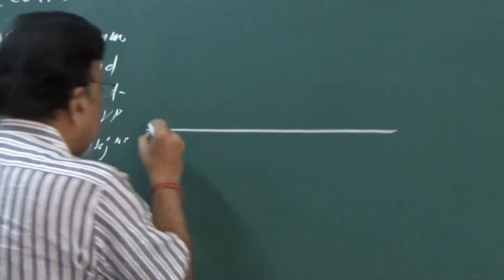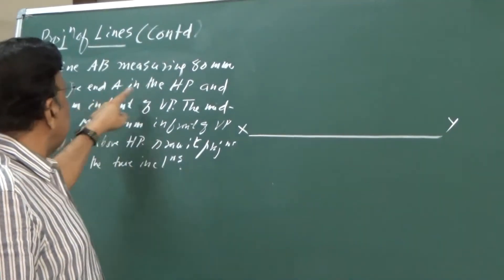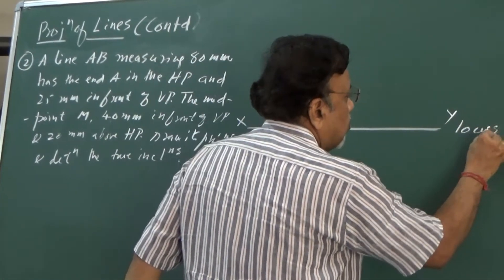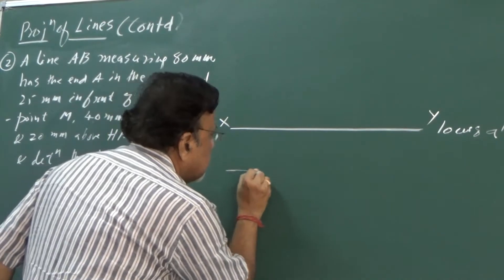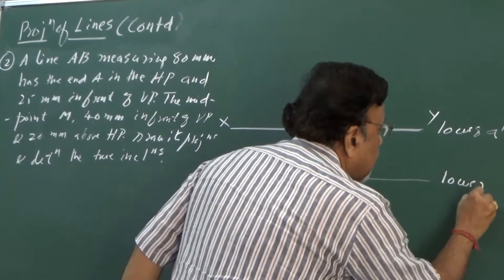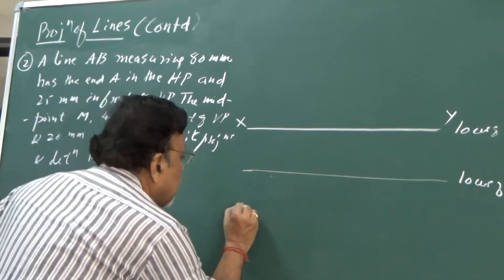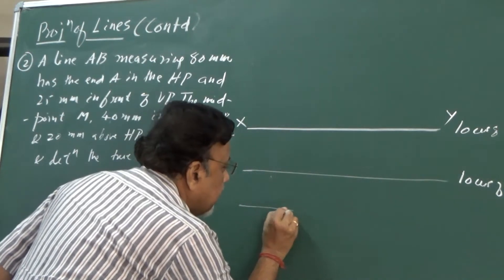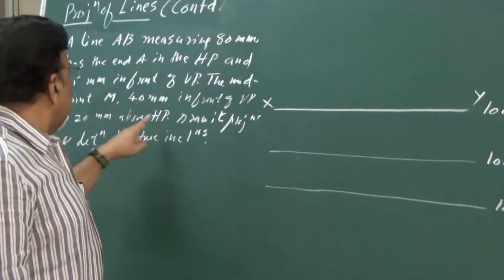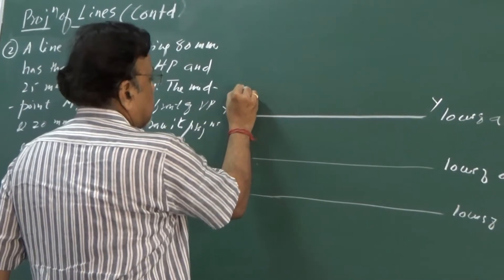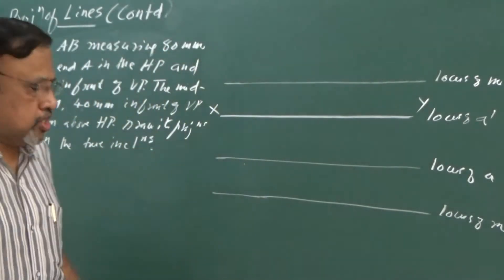Draw the XY line. Since the location of NDA as well as the midpoint is given, let me get all those loci. NDA is in HP, so the XY line itself is the locus of A-dash. Then 25mm from VP — take that line 25mm below XY as the locus of A (top view of end). The midpoint M is 40mm in front of VP, so the top view of M is 40mm below XY. It is 20mm above HP, so we take the 20mm line as the locus of M-dash.